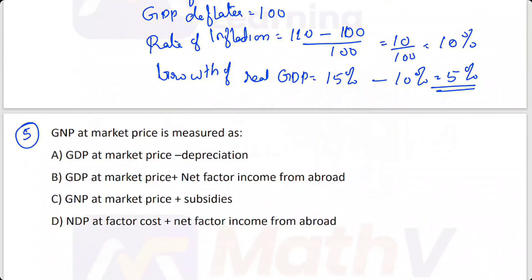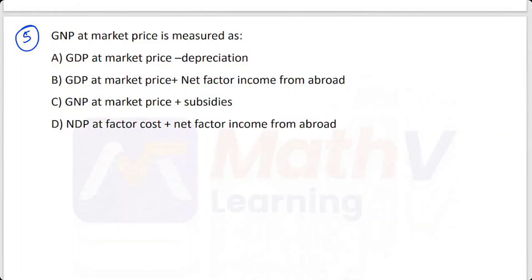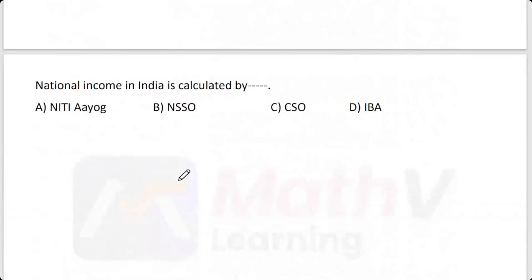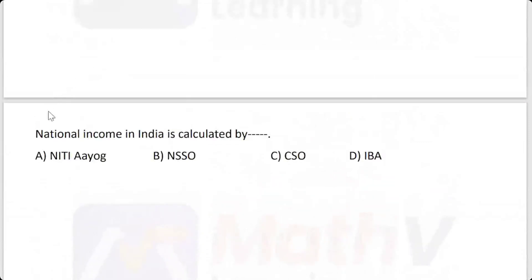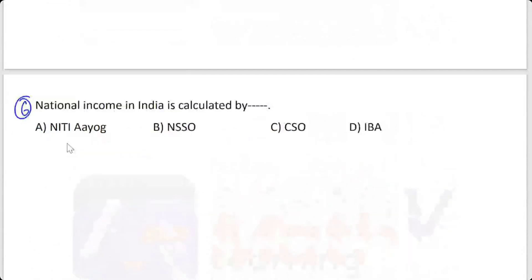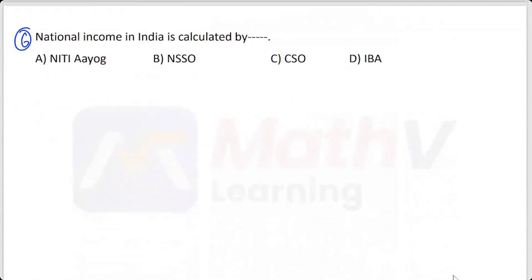The answer is B. Next question: National income in India is calculated by which method?